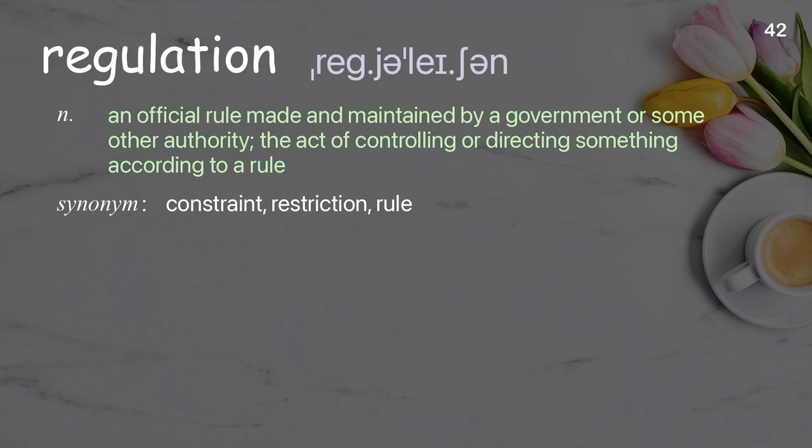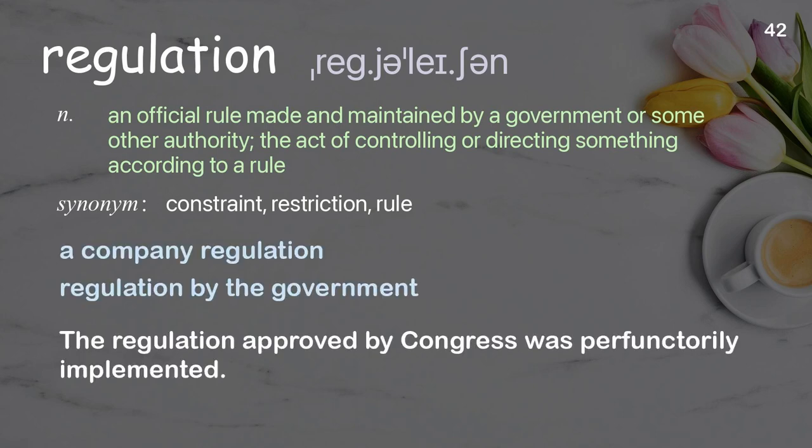Regulation: an official rule made and maintained by a government or some other authority; the act of controlling or directing something according to a rule. Examples: a company regulation, regulation by the government. The regulation approved by Congress was perfunctorily implemented.